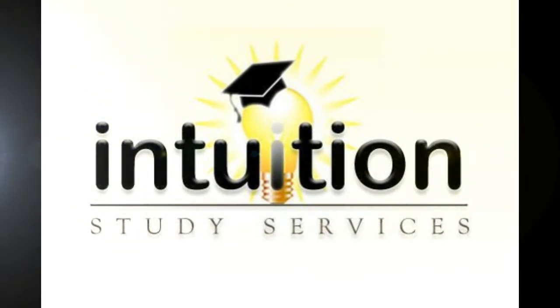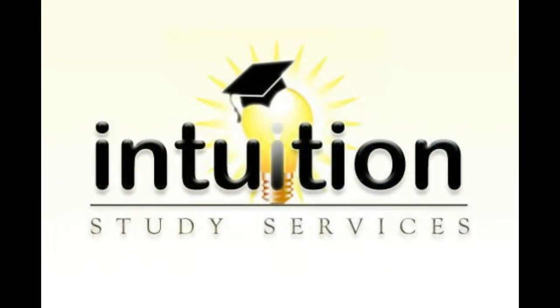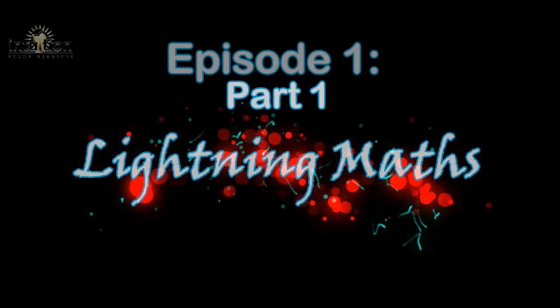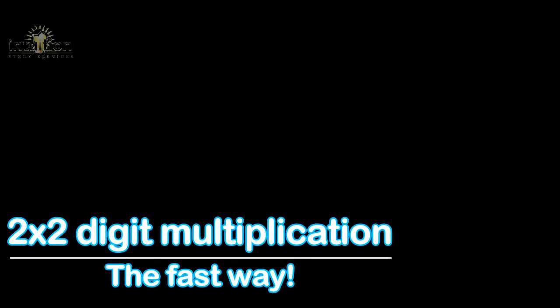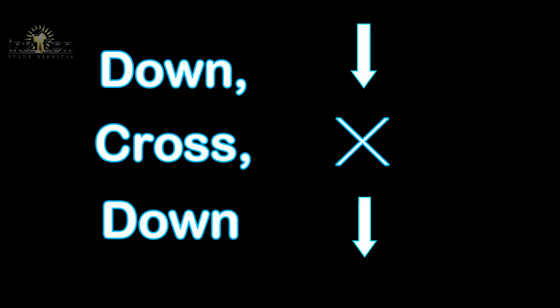Hi guys and welcome to Intuition Study Services. In today's episode we'll be looking at one variation of lightning maths, the quickest, fastest and easiest way to multiply two two digit numbers together. This will be done using the down cross down method. So, let's take a look.